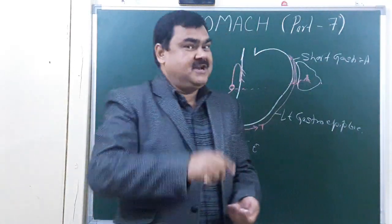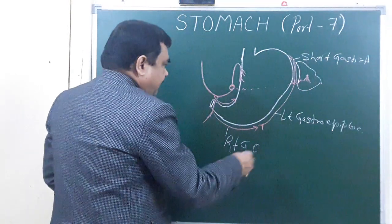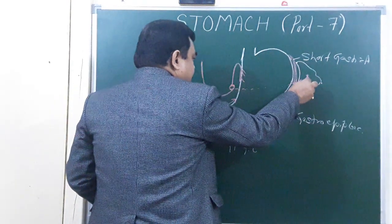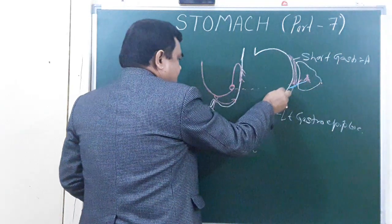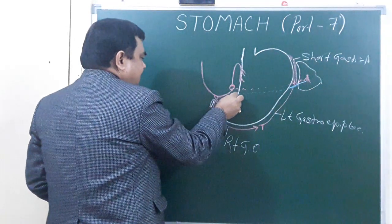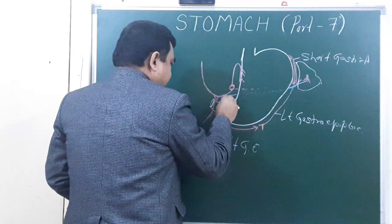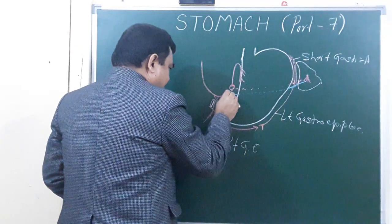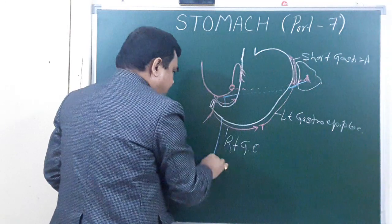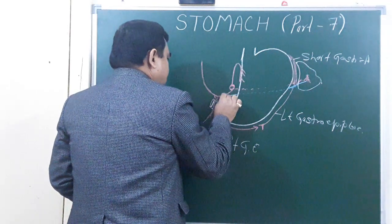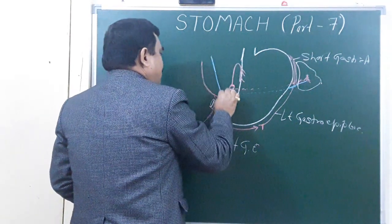Now I will discuss the venous drainage of the stomach. From the spleen, one vein passes — that is the splenic vein. The splenic vein joins with the superior mesenteric vein, and both these veins join together to form the portal vein.